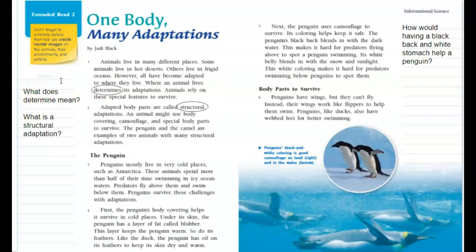Adapted body parts are called structural adaptations. An animal might use body coverings, camouflage, and special body parts to survive. The penguin and the camel are examples of two animals with many structural adaptations. I was really unsure about what they meant by the word 'structural,' so I circled it and wrote: what is a structural adaptation?